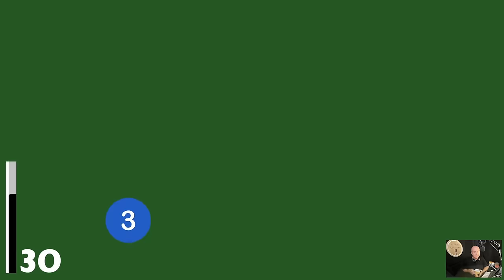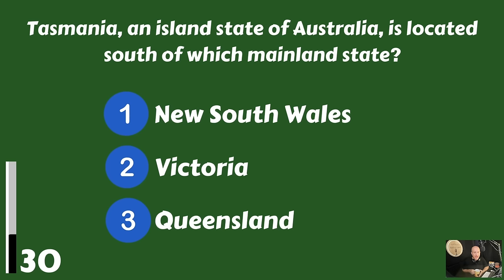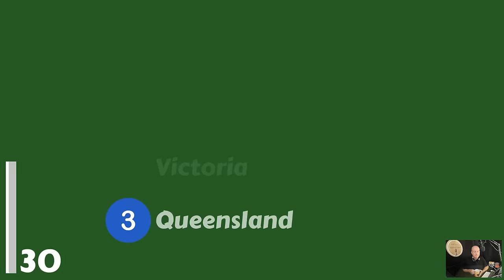Tasmania, an island state of Australia, is located south of which mainland state? New South Wales, Victoria, or is it Queensland? It is Victoria.